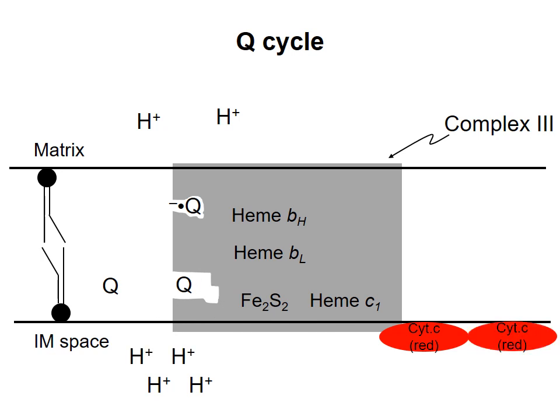The second electron is lost, going to heme BL, then to heme BH, and then to the semiquinone waiting in the other binding site. At this point, this Q gains two protons from the matrix to become QH2.